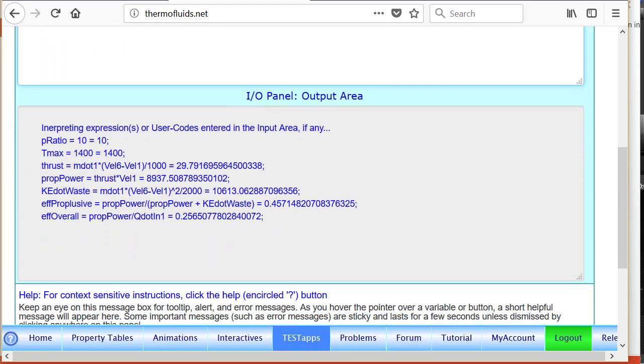We should get all their values in the I/O panel. So you can see we have solved for the thrust to be 29 kilonewtons, propulsive power of this many kilowatts. And if we look at the efficiency, it's only 45 percent propulsive efficiency and overall efficiency is very small, 25 percent.